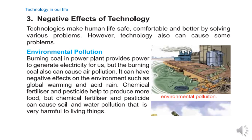Environmental pollution: The first negative effect is environmental pollution. Burning coal in a power plant provides power to generate electricity for us, but burning coal can also cause air pollution. It can have negative effects on the environment such as global warming and acid rain. Chemical fertilizers and pesticides help to produce more food, but they can cause soil and water pollution that is very harmful to living things.